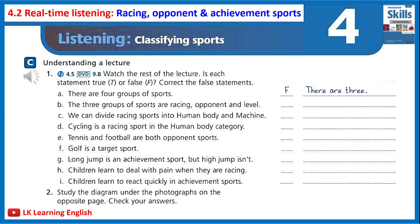Now, what sorts of sports go into each category? Let's look at the first group — racing. There are two subcategories. Some racing sports use only the power of the human body, for example running and swimming. Other sports in this category use the power of machines — cycling uses bicycles, motor racing uses cars, for example.